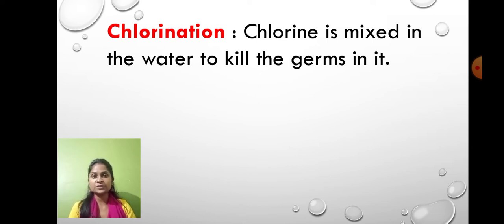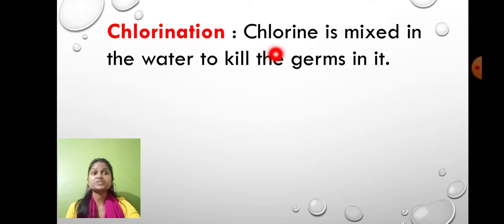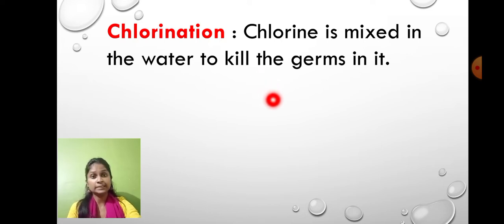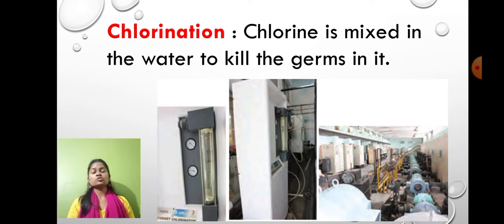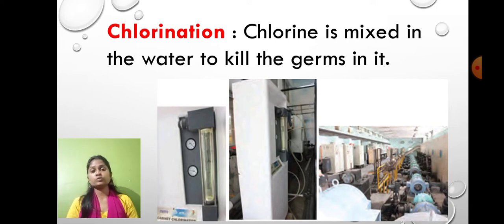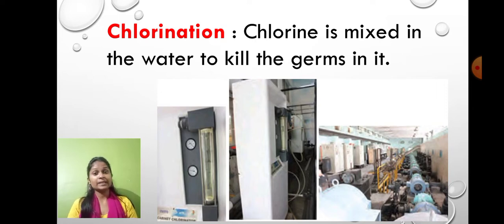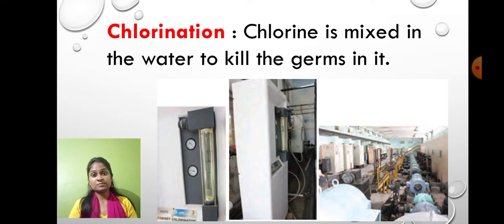The fourth method is chlorination. In this process, chlorine is mixed into the water so that germs are killed immediately. Chlorinated water is passed to water bodies to make it safe for drinking. Usually in municipal corporations, during the rainy season, chlorine is added to the water. Even in water parks, chlorine is added — when chlorine is added, germs are killed and diseases are prevented from spreading from one person to another.